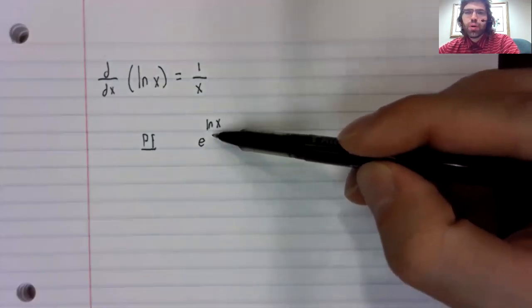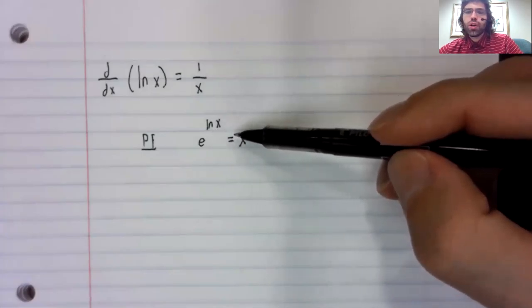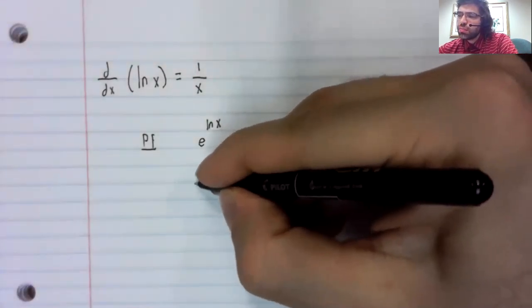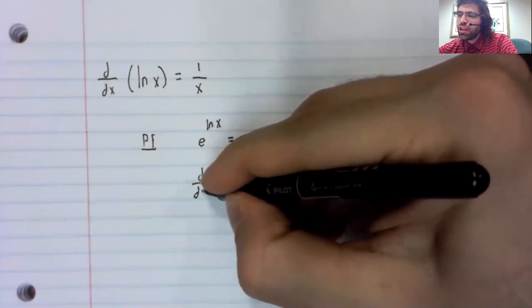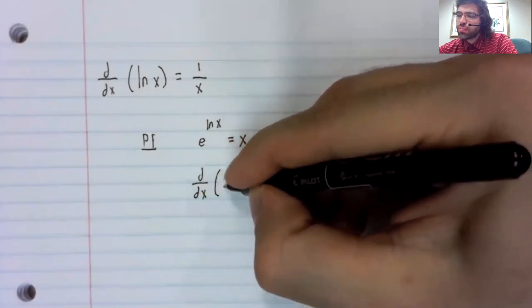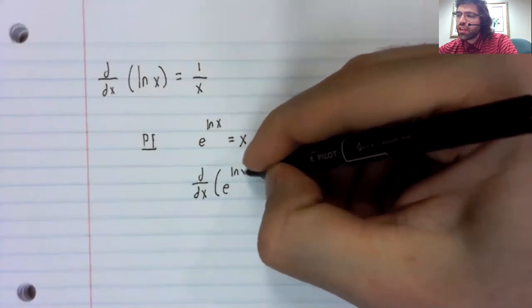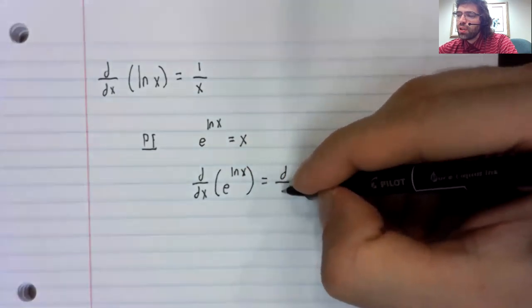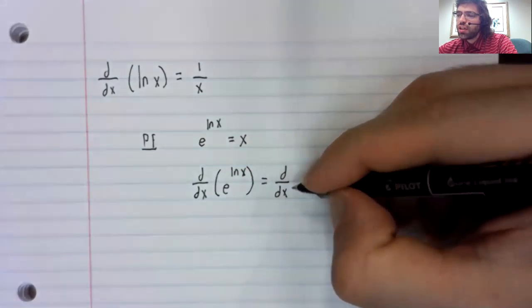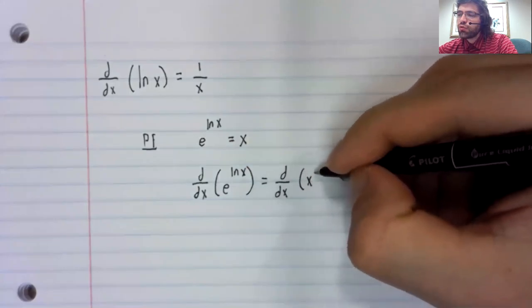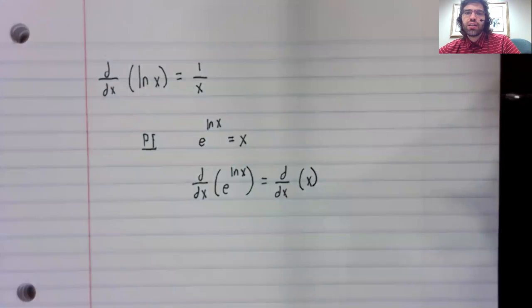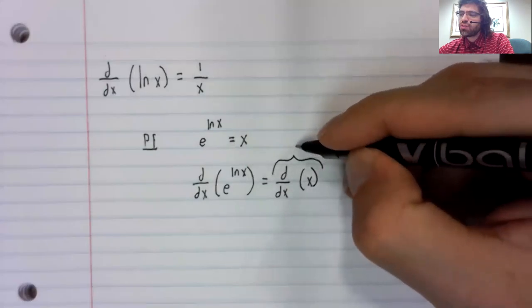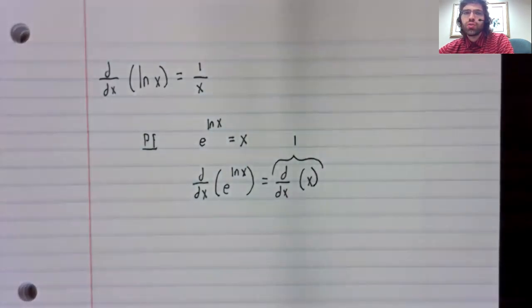And now we have one function equal to another function. So certainly, if we take the derivative of the left-hand side, we get the derivative of the right-hand side. And of course, the derivative of x is just one.